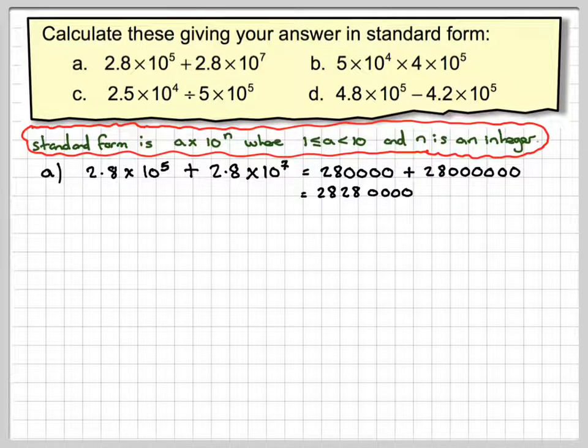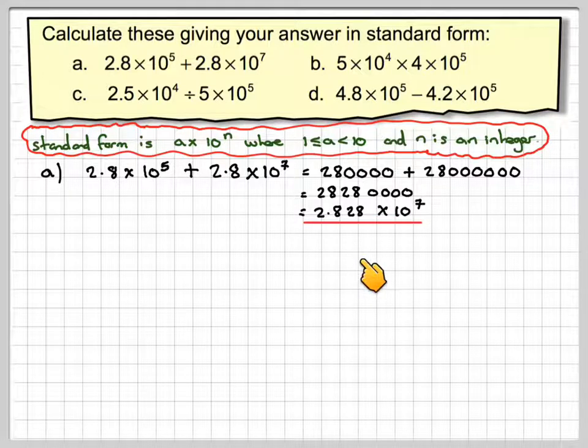Remember, we're not using a calculator here. To put this in standard form, that number will have to be 2.828. And then we need to move the decimal point 7 places, so we'll have to times by 10 to the 7.